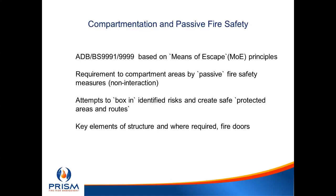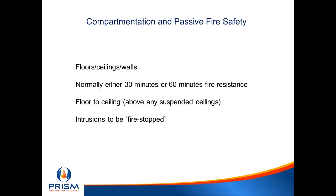The importance of compartmentation and passive fire safety: we run on the means of escape principle from Approved Document B and British Standards BS 9991 and BS 9999, which allows people to travel certain distances within a period of time to escape effectively. To allow this we need to compartmentalise areas using passive safety measures — non-interactive measures. We attempt to box in identified risks and create safe protected areas and protected routes. Compartmentation needs floors, ceilings and walls — generally 30 or 60 minutes resistance, sometimes 90, depending on where in the building.